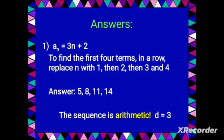For number one, the nth term is 3n plus 2. To find the first four terms, we substitute n equals 1, 2, 3, and 4. When n equals 1, we get 5; when n equals 2, we get 8; n equals 3 gives 11; and n equals 4 gives 14. So the sequence is 5, 8, 11, 14 — and it has a common difference of 3, which means it is arithmetic.